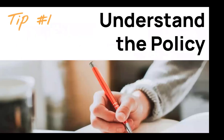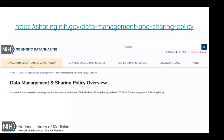Tip number one is to understand the policy. I know this might seem a little simplistic, but I've been working hard on getting my institution compliant for this policy for over a year now, and I still sometimes surprise myself with something I misunderstood or overlooked. There are many resources to help you figure out what the policy is actually about. The NIH has pulled together the website sharing.nih.gov, which goes through things both in policy language and in plain language, including things like just-in-time submissions.